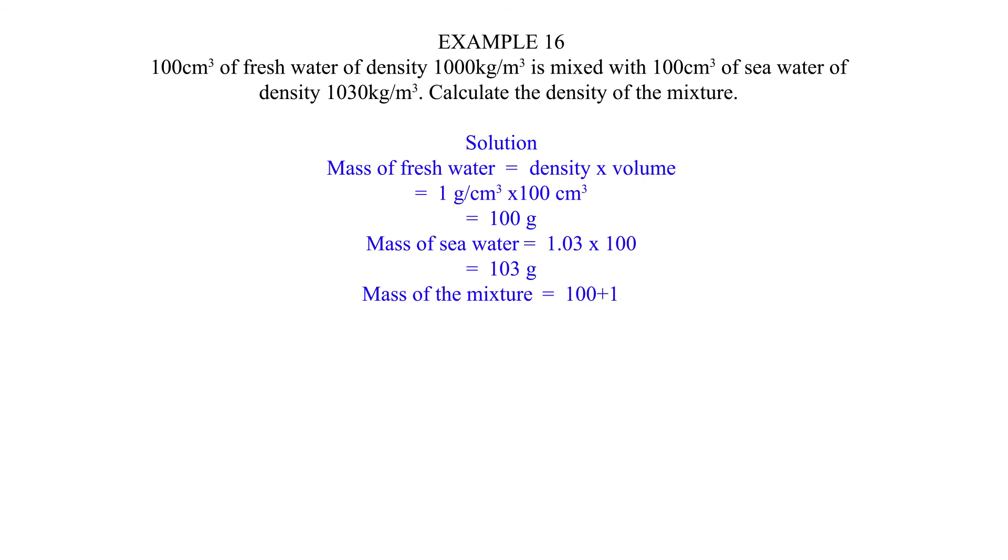Mass of the mixture equals 100 plus 103 equals 203 grams. Volume of the mixture equals 100 plus 100 equals 200 cubic centimeters. Density of the mixture equals 203 divided by 200 equals 1.015 grams per cubic centimeter.